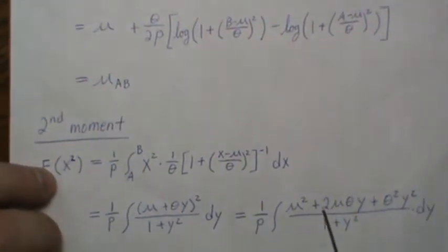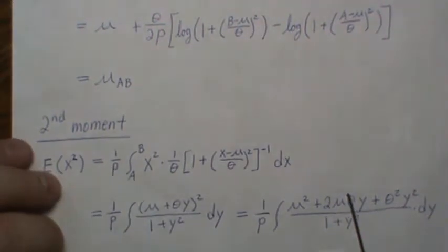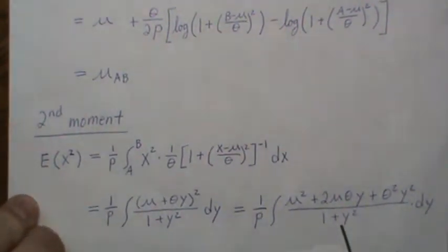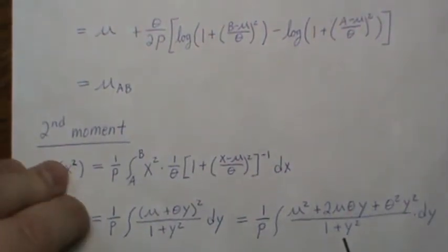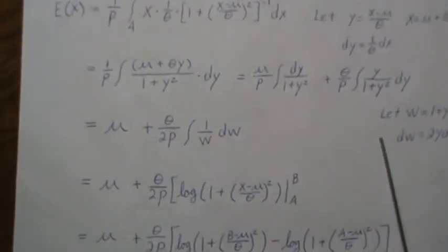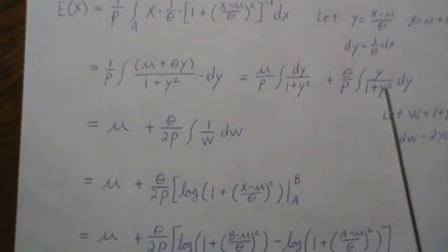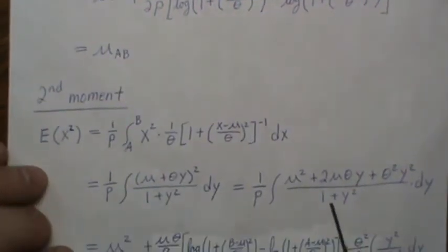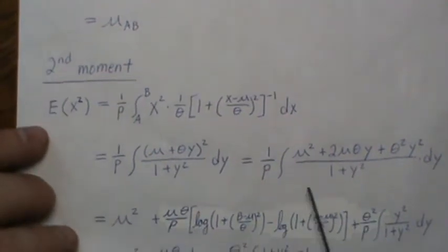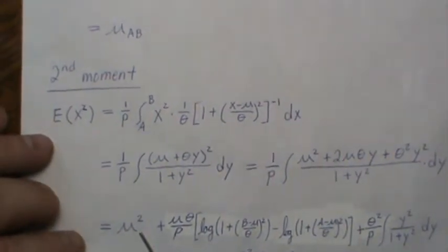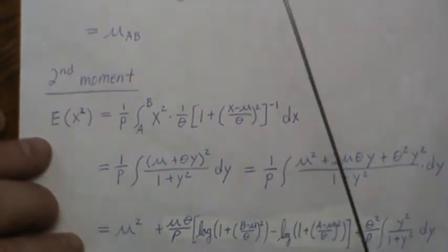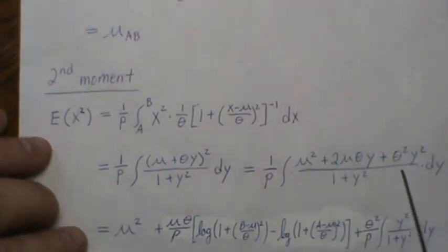For this one, we have 2 mu theta, or constants, so they go out front, and we're left with Y over 1 plus Y squared, which is what we evaluated here. And it's the second piece that comes down here. So I'm not going to go through that math again. And so the mu squared is here, and this piece becomes this piece based on the work we did before.